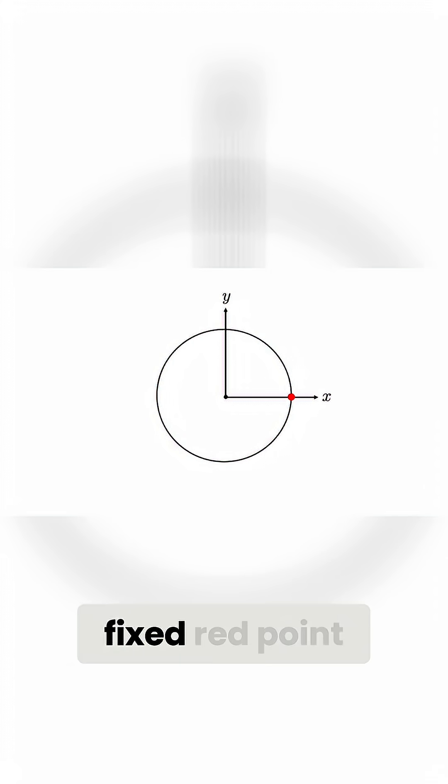imagine we have a fixed red point, such that when we rotate the circle, the blue point rotates as the circle rotates, but the red point remains fixed.